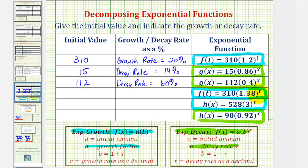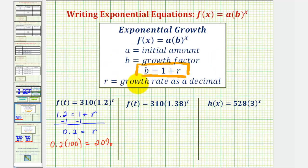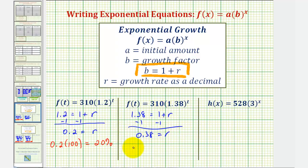Our next function is exponential growth. The initial value is 310, and the growth factor B is 1.38. We have 1.38 equals one plus R. Subtracting one on both sides gives us R equals 0.38, and 0.38 times 100 equals 38 percent. So the growth rate is 38 percent.